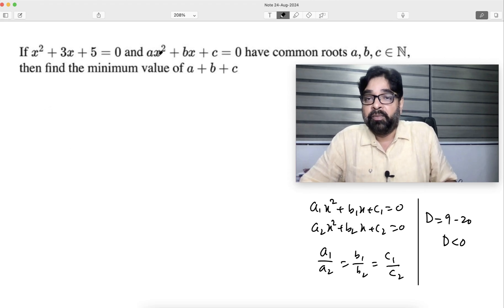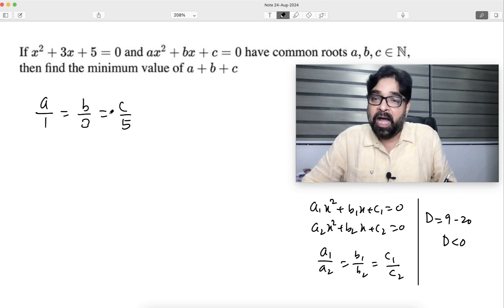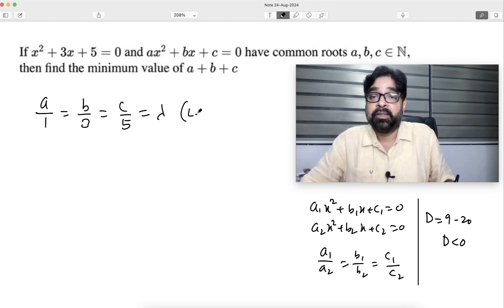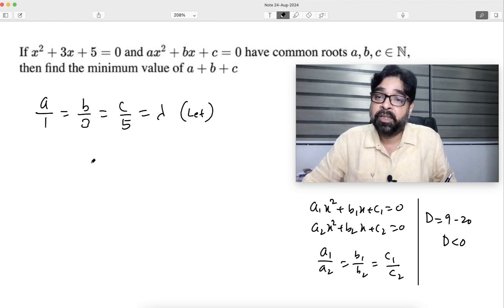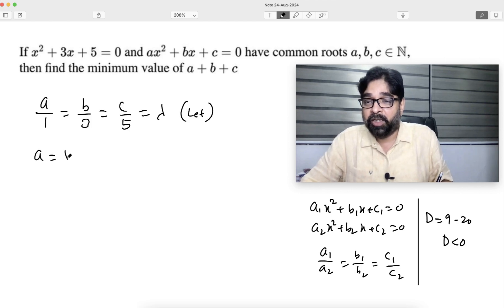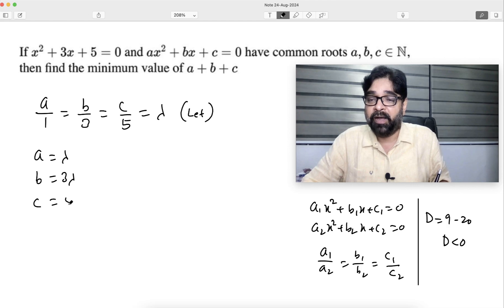We will say a/1 will be equal to b/3 will be equal to c/5. All three are equal. If three ratios are equal, they will be equal to some constant, let's say lambda. So a = lambda, b = 3 lambda, c = 5 lambda. They are asking minimum value of a + b + c.